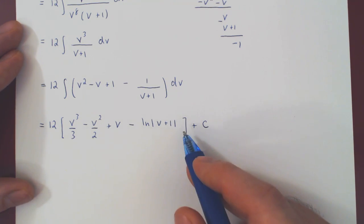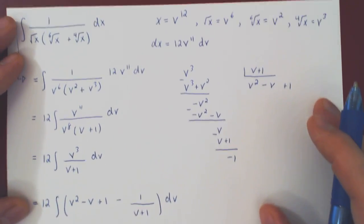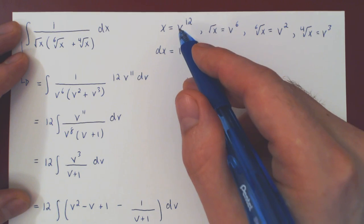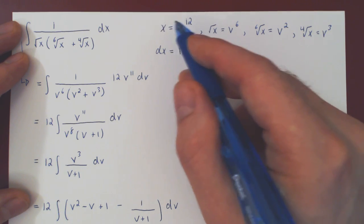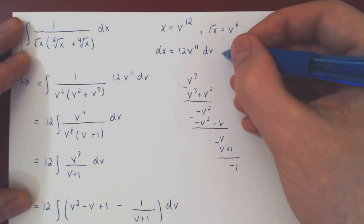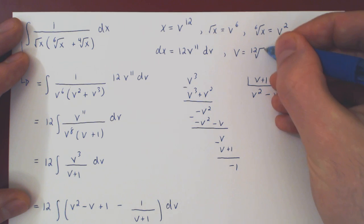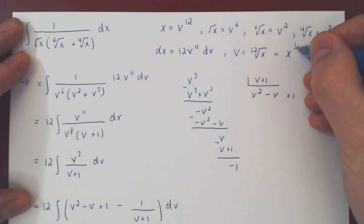And our final step is to go back from v to a function of x. Well, if x is v to the 12, v will be taking the 12th root on both sides, the 12th root of x, which you can of course write as the 12th root of x or as an exponent of 1 over 12.